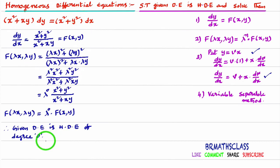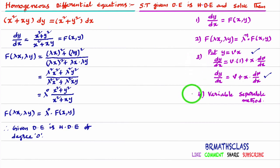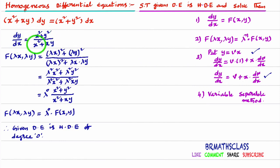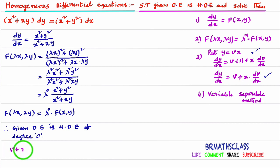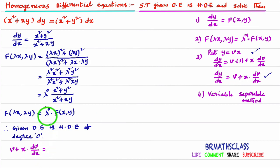Now it's time for solving the differential equation. For step 3, we put y = vx and dy/dx = v + x·(dv/dx) in the given differential equation. In place of dy/dx, write v + x·(dv/dx). In the right-hand side, replace y with vx.